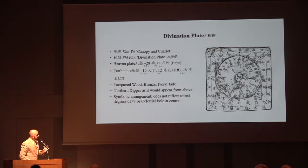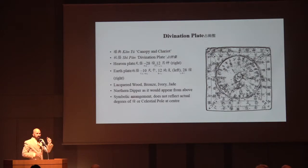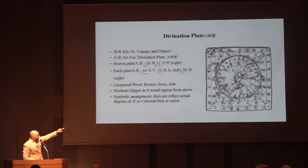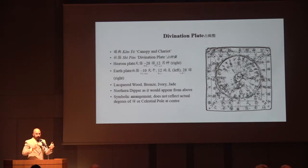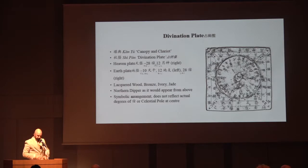This is also a symbolic arrangement of the heavens, because the 28 mansions each have a different number of degrees — some are very big, some only have three stars, so they have unequal widths around the celestial equator. On the device they're equally spaced. Also on the device the dipper is in the middle, whereas in reality the pole star is in the middle. But for the purpose of this device it's symbolic — we put the dipper right in the middle.